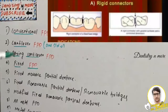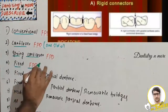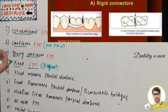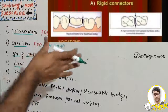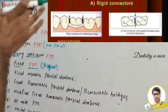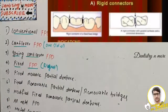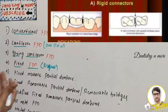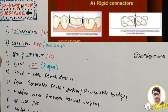Fixed-fixed partial denture denotes FPDs with rigid connectors. Since the connectors are rigid, there can be no movement between the connected components. These are the most commonly used FPD designs. The main advantages are: easy to fabricate, economical, strong, easy to maintain, good retention and strength, helps to splint mobile abutments, and can be used for long bridges along with periodontally weak abutments.